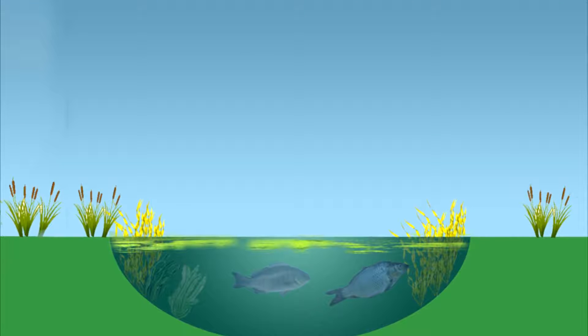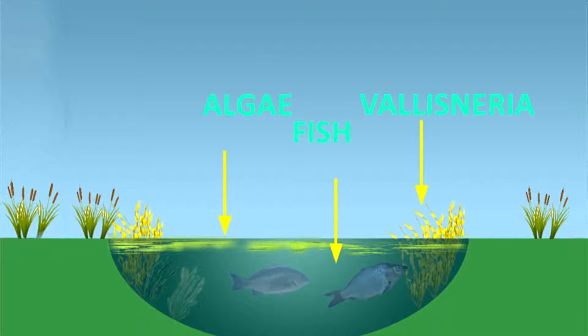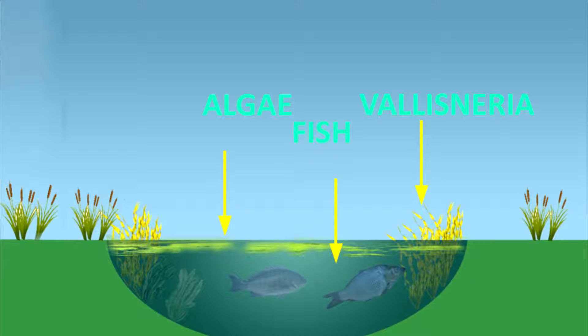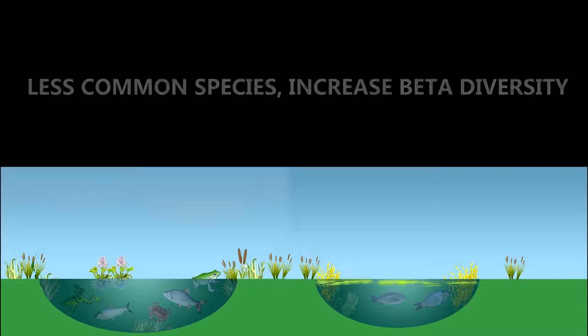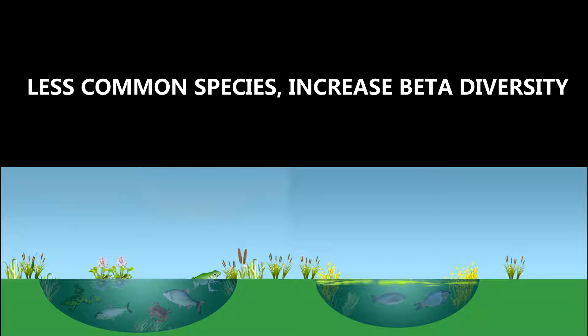The diversity seen between two different ecosystems is called beta diversity. Suppose beside this pond ecosystem, there is another pond ecosystem where some algae, Vallisneria, and some fishes are found. The difference or diversity between those ecosystems is called beta diversity. The fewer common species there are, the greater the beta diversity.